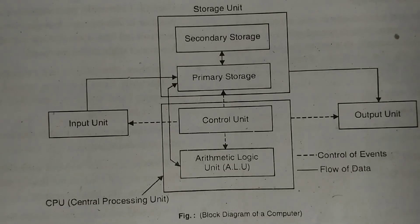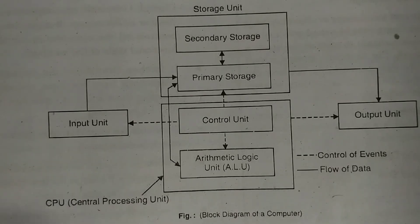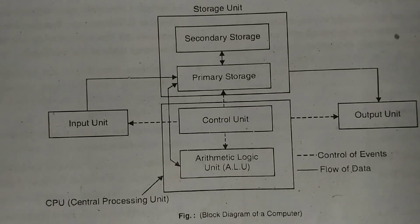Together the storage unit, control unit, and ALU form the central processing unit. The data processed in the CPU is displayed as output according to the instructions applied to it. Output devices include visual display units, printers, plotters, and speakers. The output unit accepts results produced by the computer in binary form (zeros and ones), converts them into human-readable form, and supplies the converted results to the user.